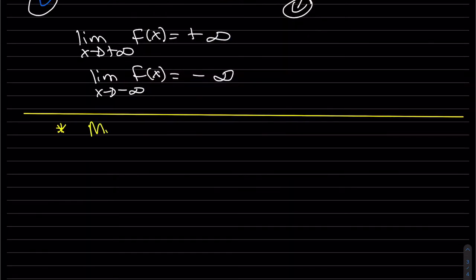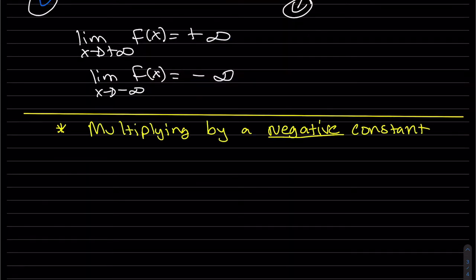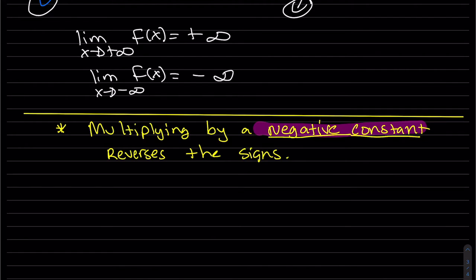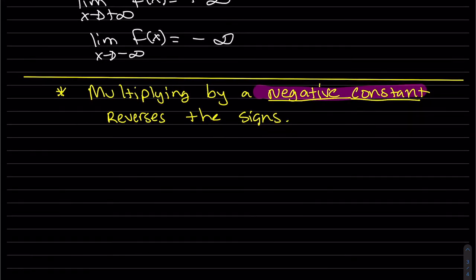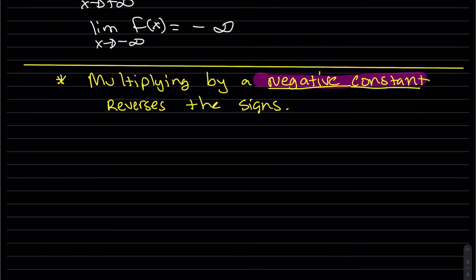If you multiply a function by a negative constant, or factor out a negative, it's going to reverse the signs of the end behavior. If you multiply by a positive constant, it doesn't change the sign — it'll have the same end behavior.